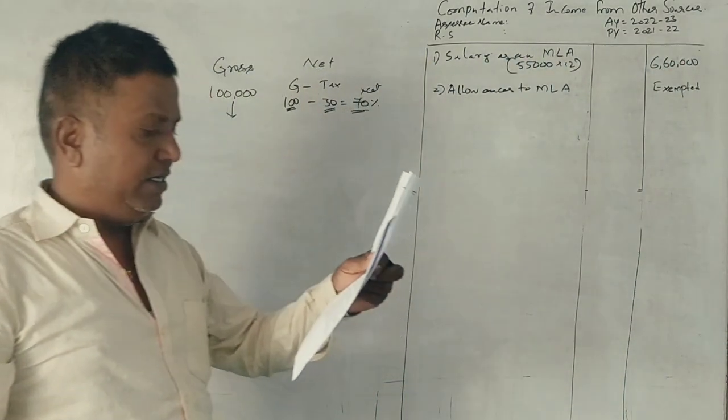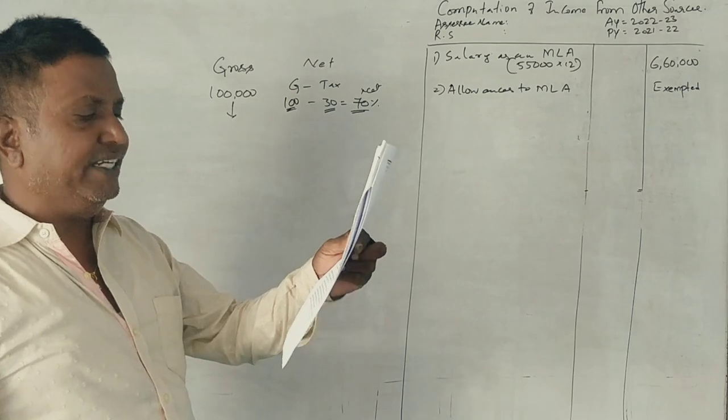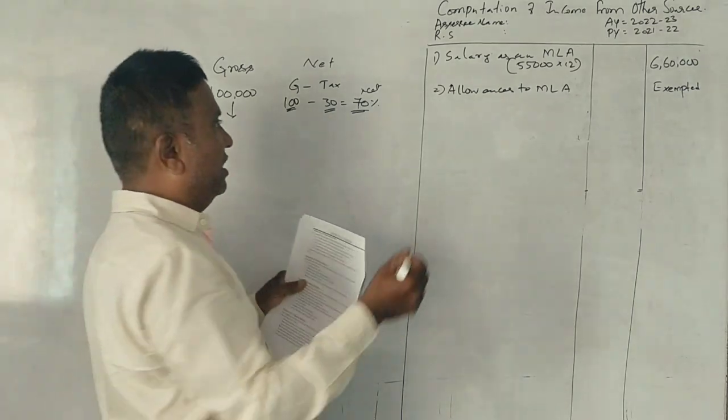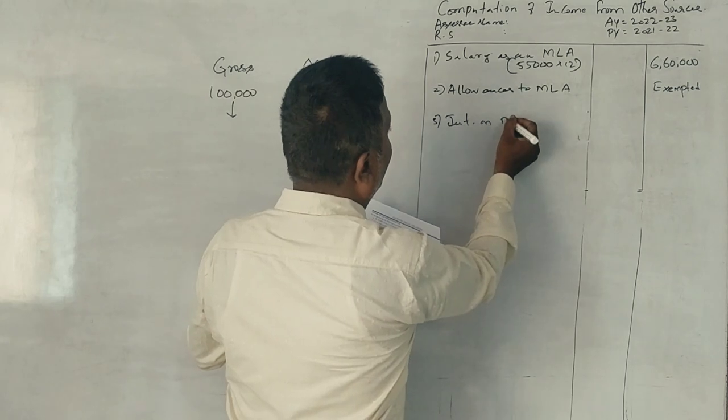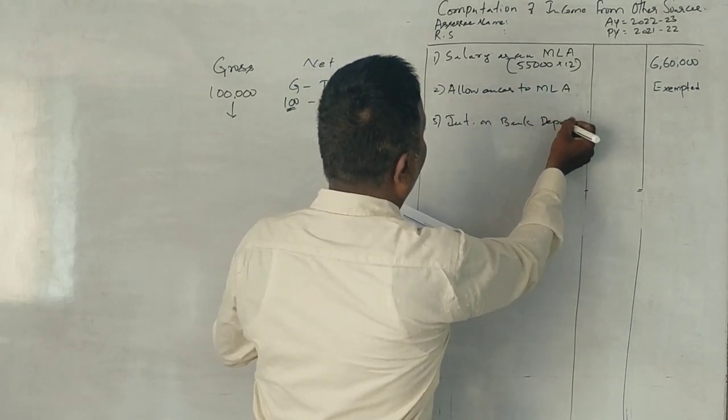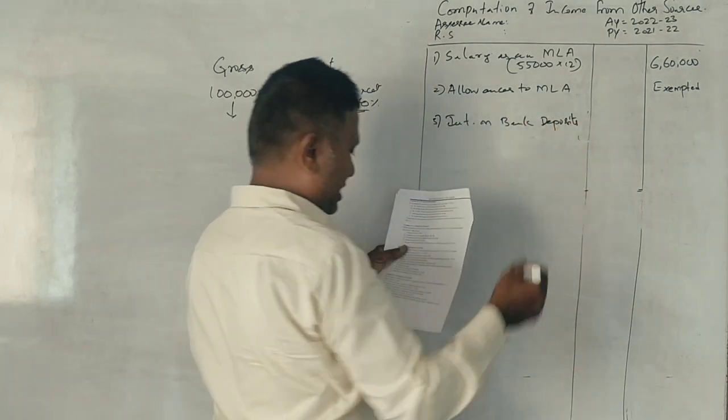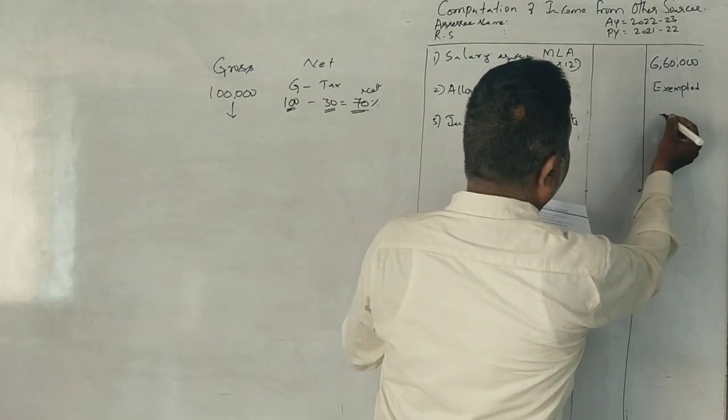Next point. Interest on fixed deposit with Central Bank of India. See, interest on bank deposits, full amount is taxable. 77,000.